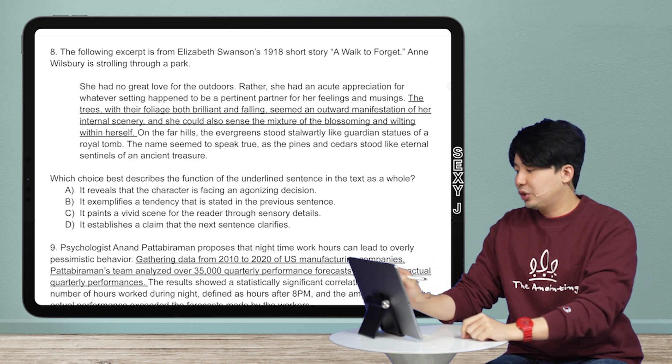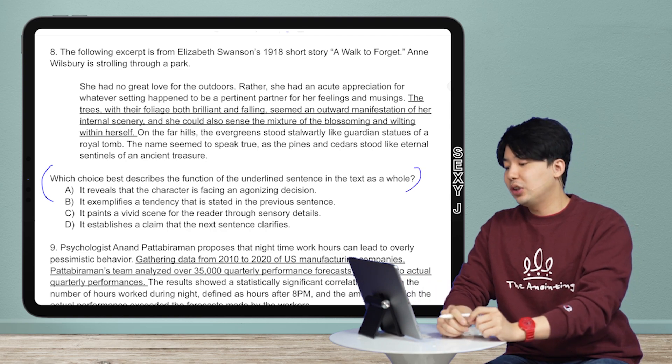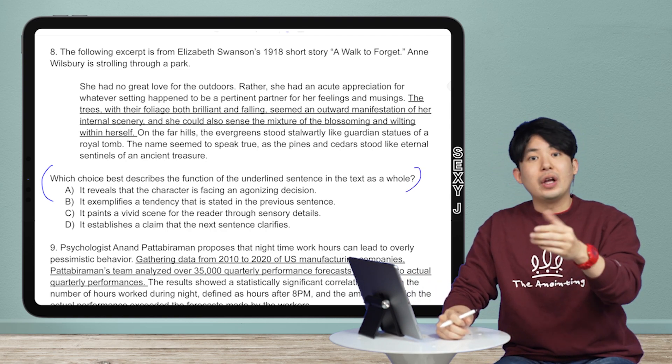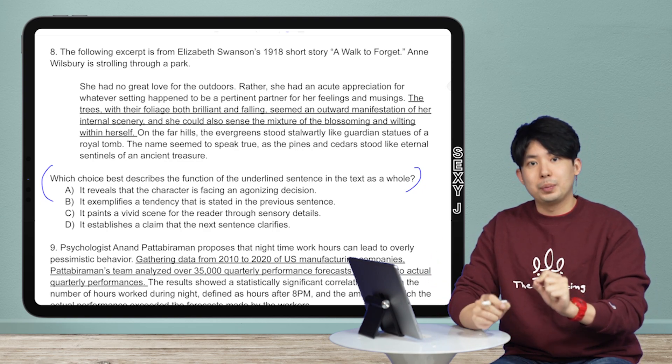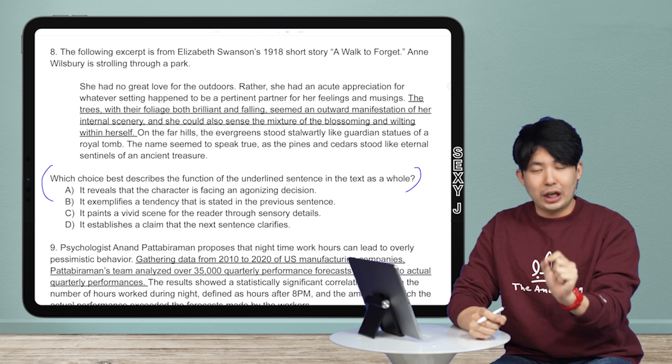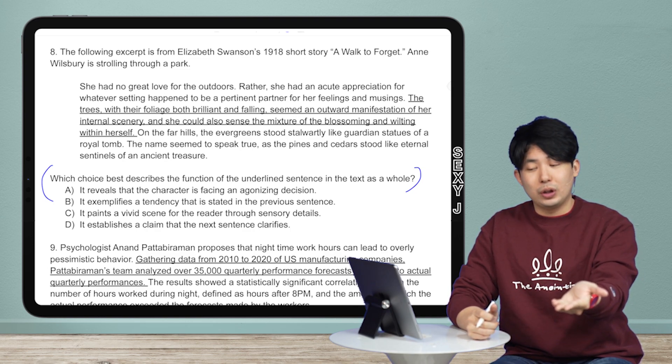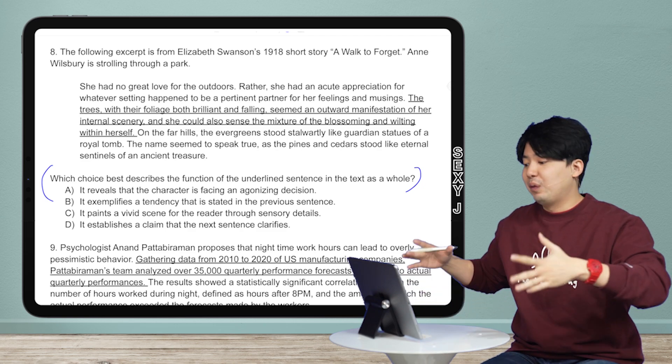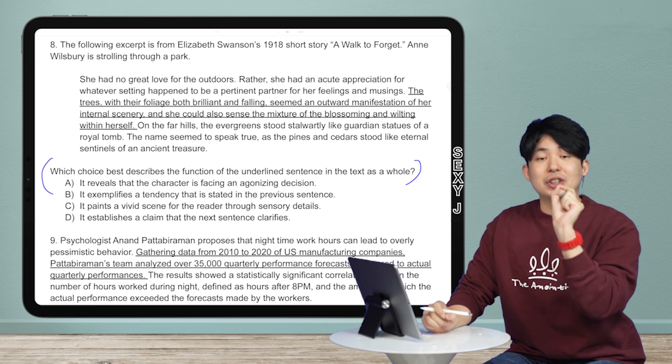Which choice best describes the function of the underlined sentence in the text as a whole? That's a new one because they're asking for not the function or purpose of the entire passage, but the function or purpose of just this one sentence. So that was much more of an AP lit or SAT lit back in the day question, or even AP lang. They've incorporated it into the SAT now.